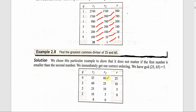Now R1 = 60 and R2 = 25. We divide: 60 divided by 25. The quotient is 2, since 25 times 2 is 50. The remainder is 60 minus 50 = 10. We exchange values: R2 is copied to R1 and the remainder is copied to R2. Now R1 = 25 and R2 = 10.